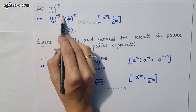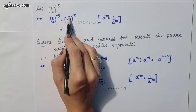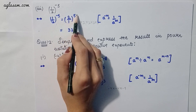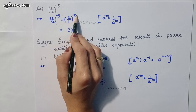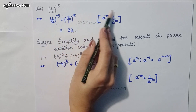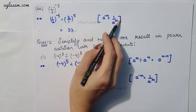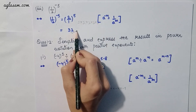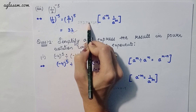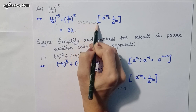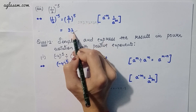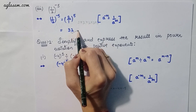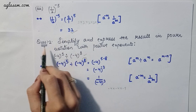Moving to the third part: (1/2)^(-5). This means (2/1)^5. Applying the formula again we get 2^5 = 2 × 2 × 2 × 2 × 2 = 32.